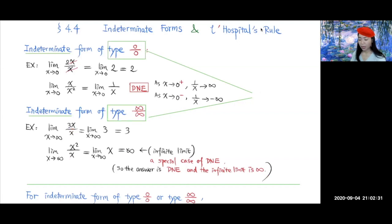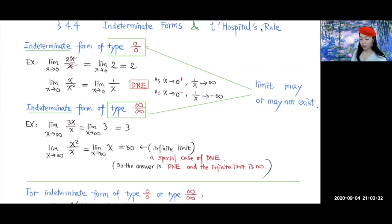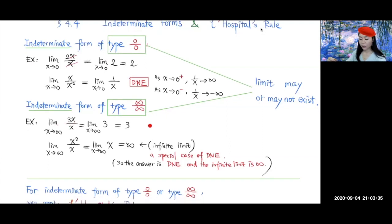As you can see, both limits are of type infinity over infinity; however, one limit exists as a finite number while the other does not exist. So both the 0 over 0 type and the infinity over infinity type are called indeterminate forms, because the limit may or may not exist. We've now gone over these two indeterminate forms: one is the 0 over 0 type and the other is the infinity over infinity type.